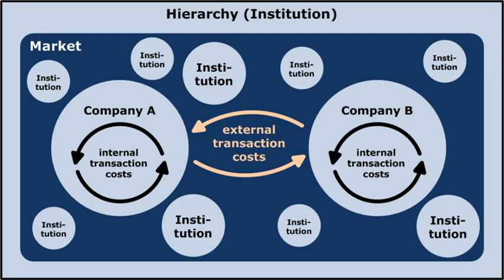Policing and enforcement costs are the costs of making sure the other party sticks to the terms of the contract, and taking appropriate action if this turns out not to be the case. For example, the buyer of a used car faces a variety of different transaction costs. The search costs are the costs of finding a car and determining the car's condition. The bargaining costs are the costs of negotiating a price with the seller. The policing and enforcement costs are the costs of ensuring that the seller delivers the car in the promised condition.